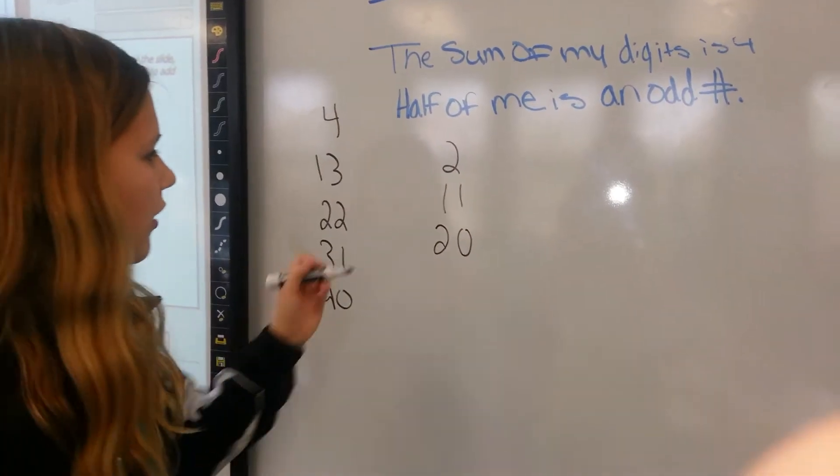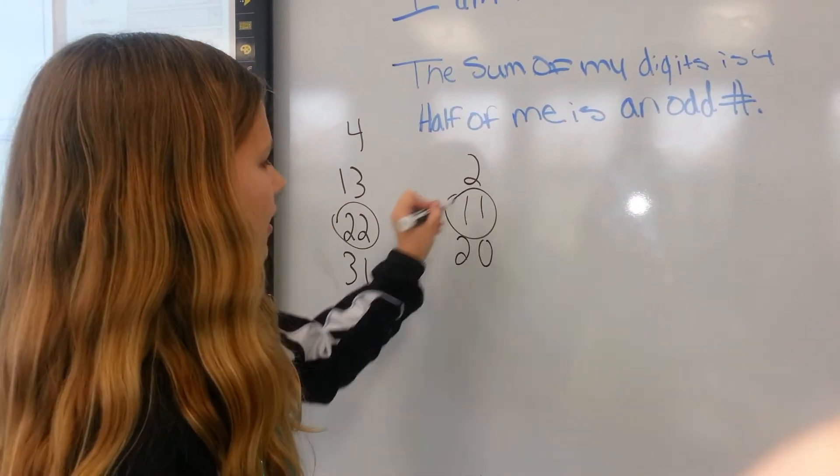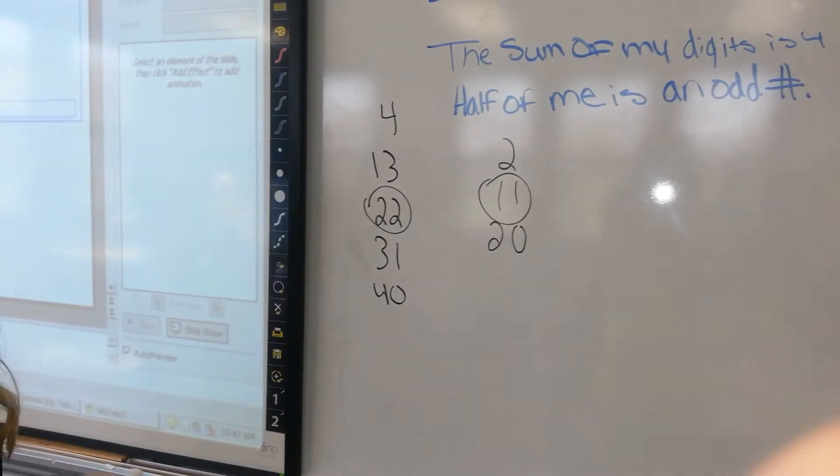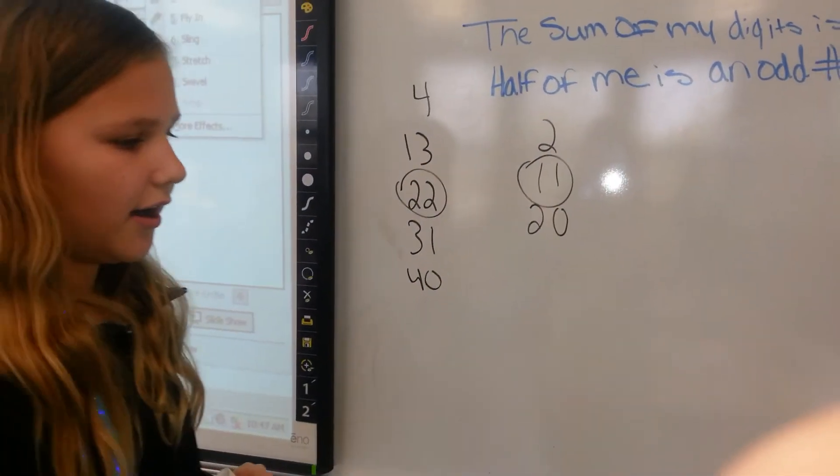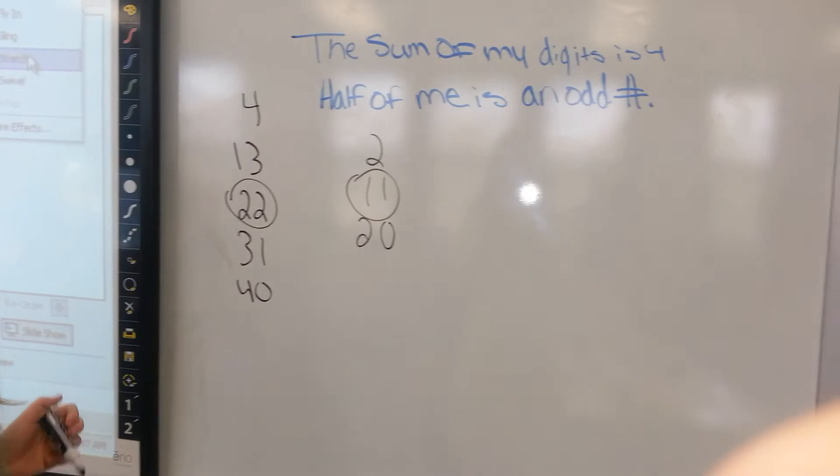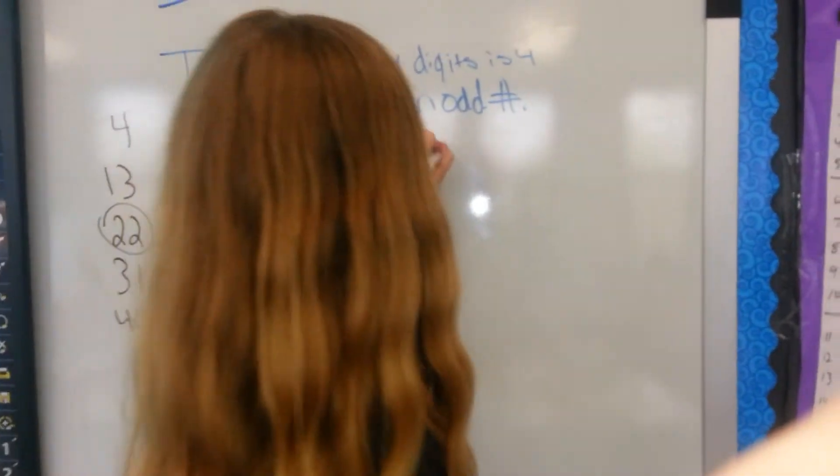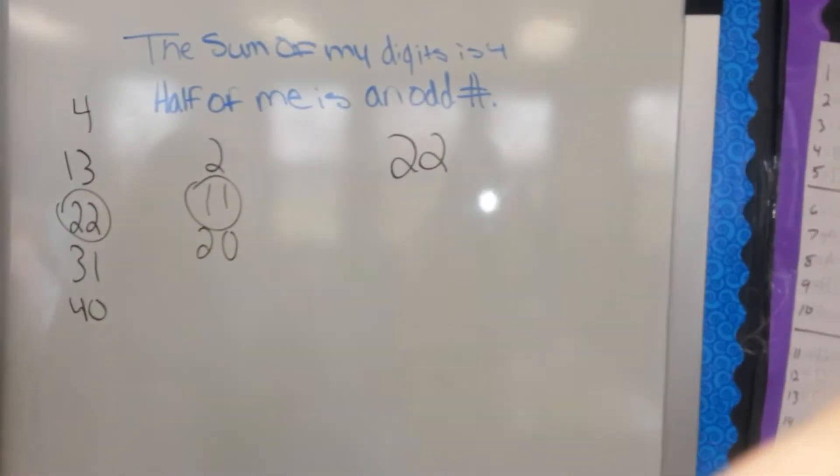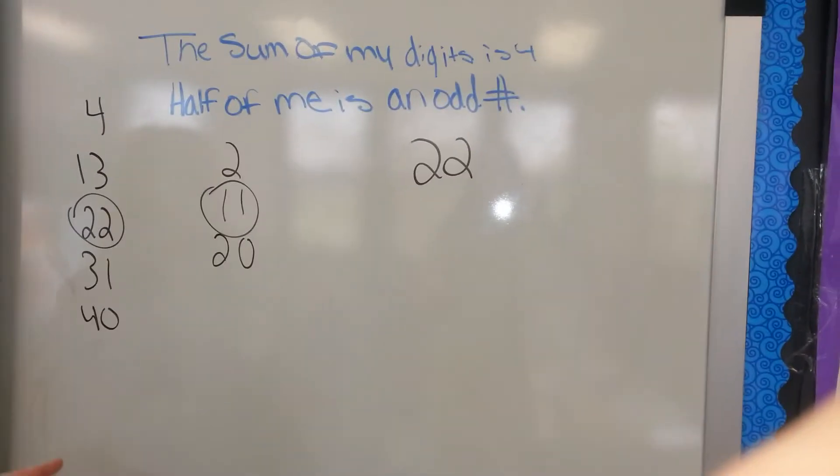Right now we already know that it's 22, because the divided by 2 is 11, because it has to be odd. And then it says, so the number is 22, and then you have to, is it prime or composite?